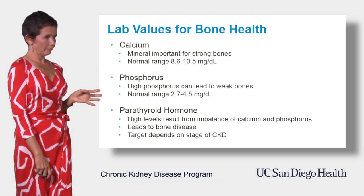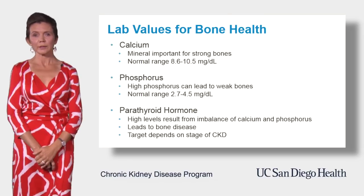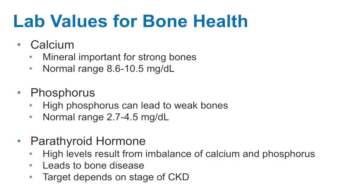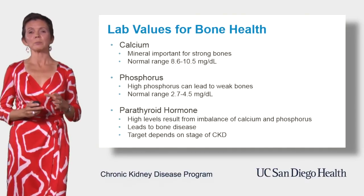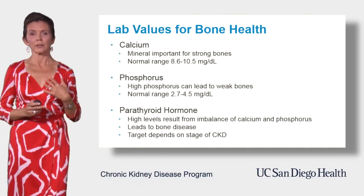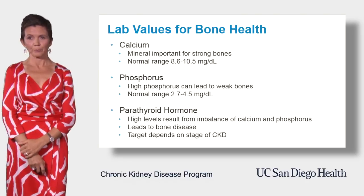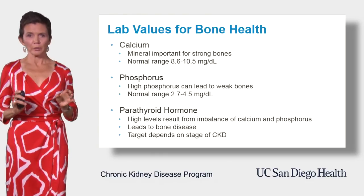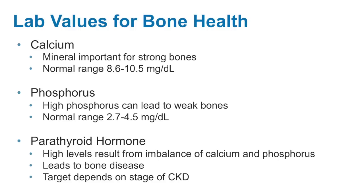The next three laboratory values have to do with bone health — they can be adversely affected by kidney disease and lead to weak bones. Calcium and phosphorus are important for strong bones. Abnormal levels of calcium and phosphorus, besides leading to bone disease, can get deposited in your blood vessels, heart, and other organs and cause damage as well. Normal levels are 8.6 to 10.5 mg/dL for calcium and 2.7 to 4.5 for phosphorus.